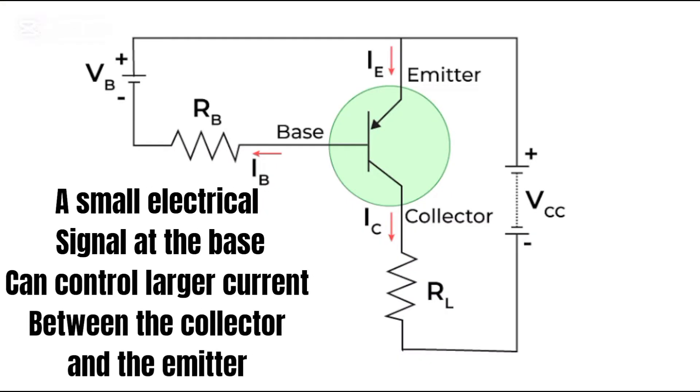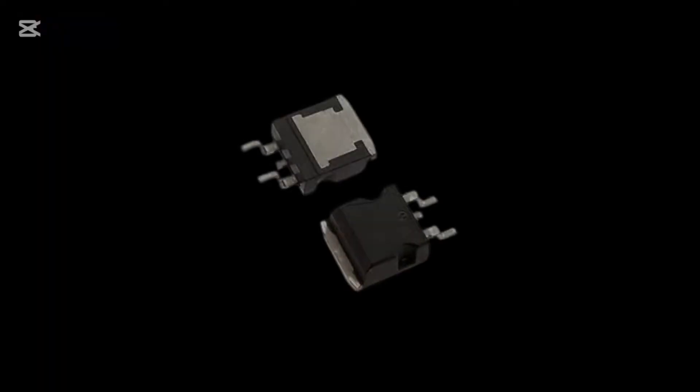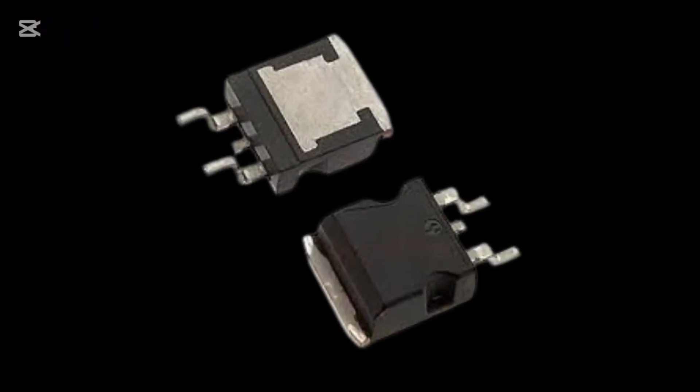In a BJT, the current flowing through the base terminal controls a much larger current between the collector and emitter terminals. This is a key characteristic that makes BJTs so versatile.